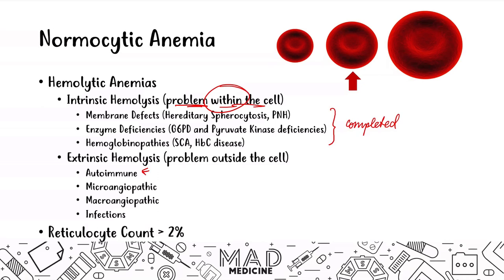One thing to understand is the reticulocyte count is going to be raised — greater than 2%. Normal is 1% to 2%. The reason why is your bone marrow realizes that you have lysis of red blood cells, causing decreased RBC count and decreased haptoglobin as hemoglobin is released. Your body ramps up production, releasing more immature red blood cells, which leads to an increased reticulocyte count — something only seen in hemolytic anemias.